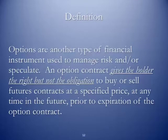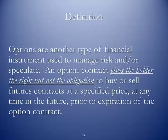Options are another type of financial instrument used to manage risk and or to speculate. An option contract gives the holder the right but not the obligation to buy or sell futures contracts at a specified price at any time in the future prior to the expiration of the option contract. This is an important point: if you're buying an option — in other words, you're the holder of the option — you have the right but not the obligation to either buy underlying contracts or sell them. You do not have to.